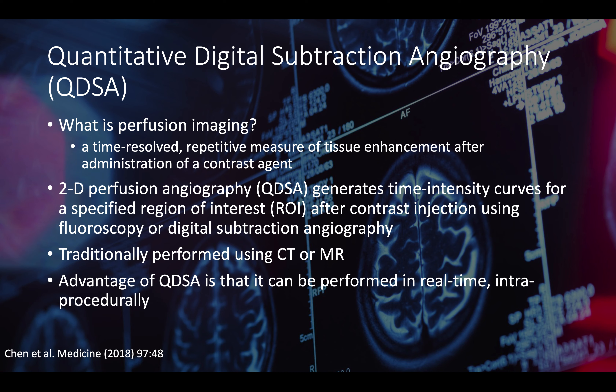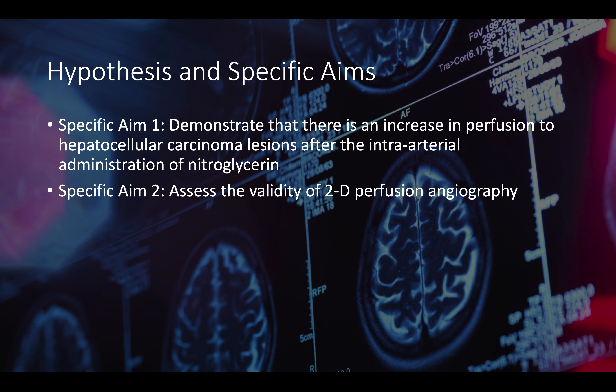Traditionally, most perfusion imaging is done using CT or MR, with the disadvantage that those are static imaging. QDSA can actually be performed in real-time situations. Our hypothesis is that there is going to be an increase in perfusion to hepatocellular carcinoma lesions after the intra-arterial administration of nitroglycerin. Our secondary goal was to assess the utility of 2D perfusion angiography.